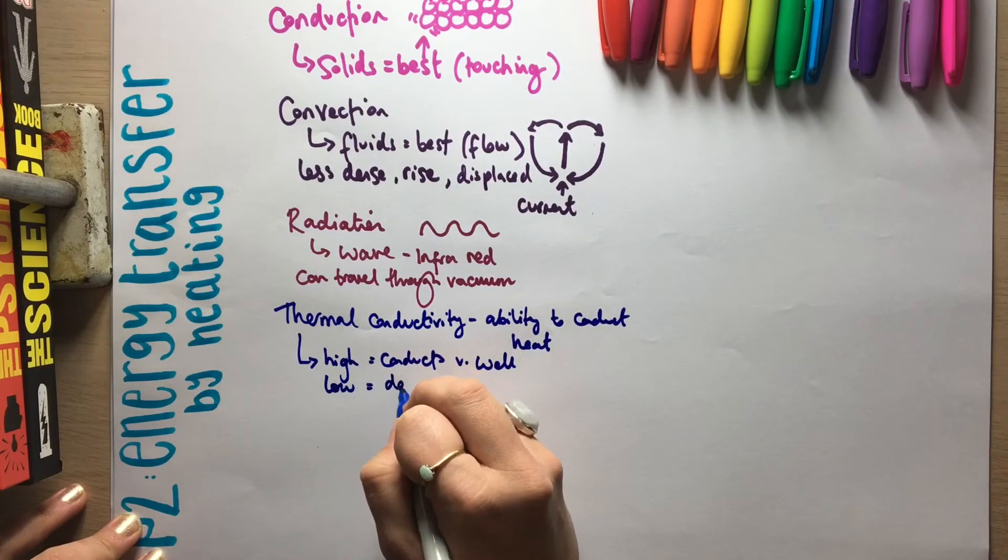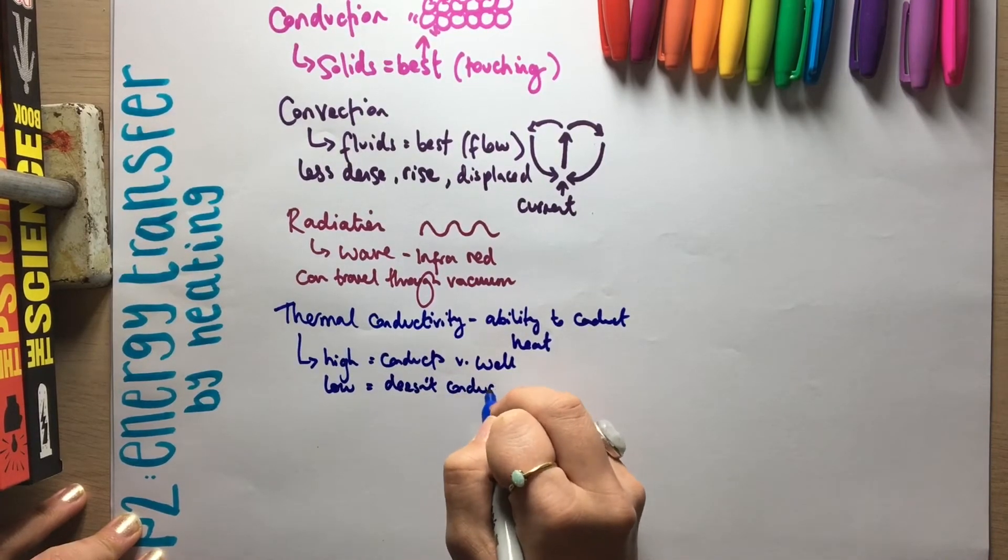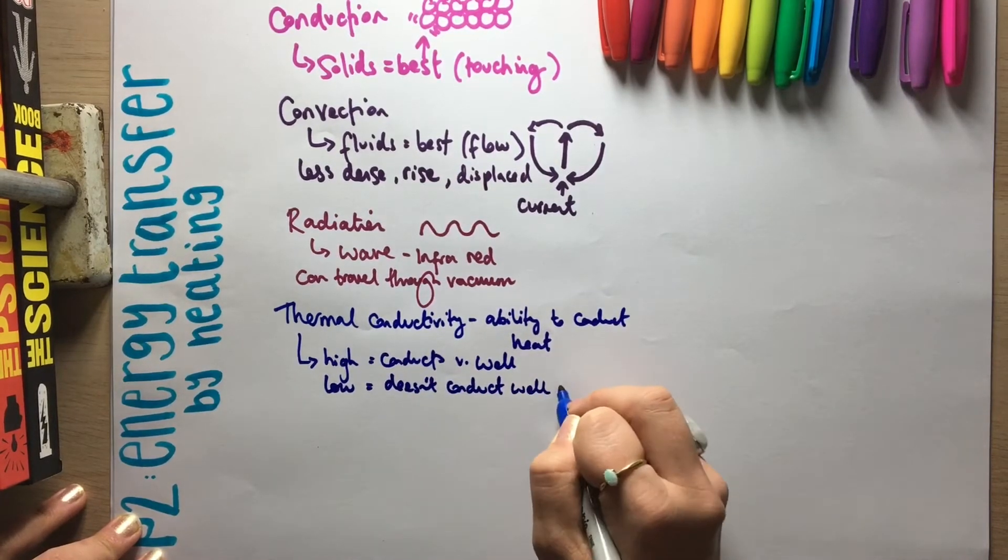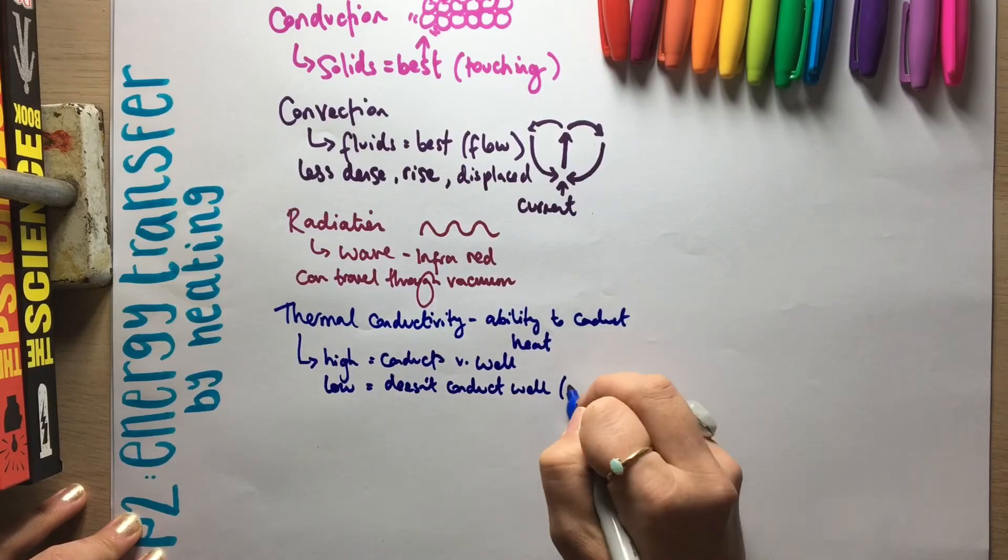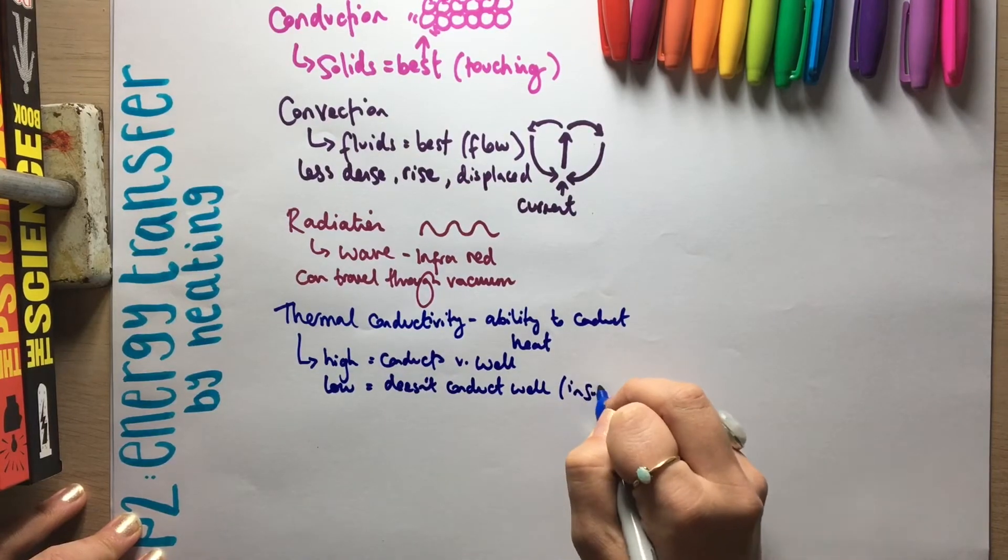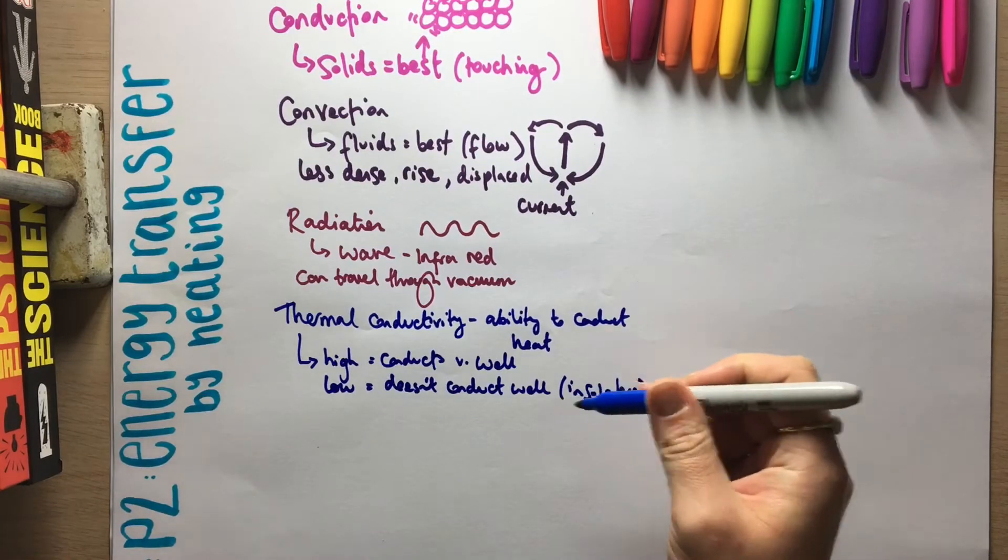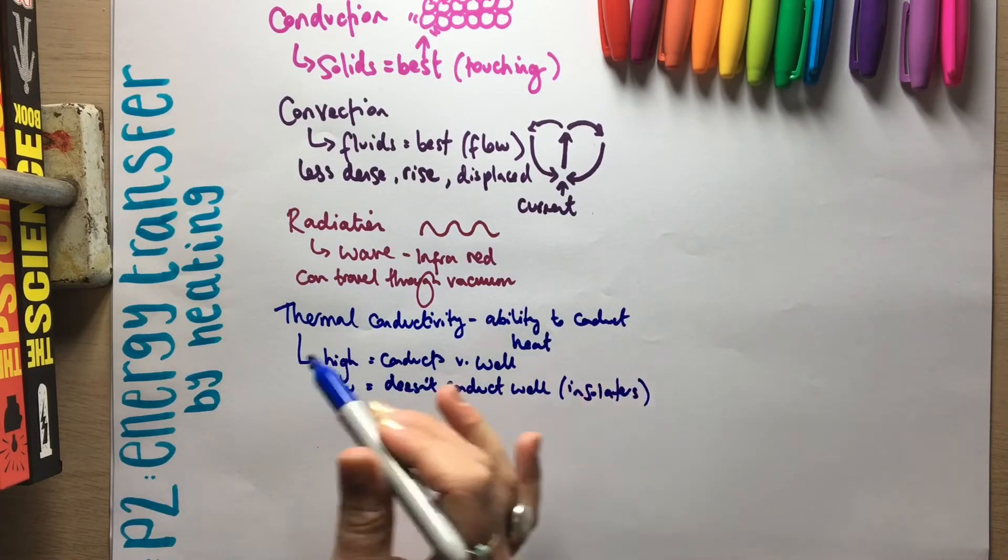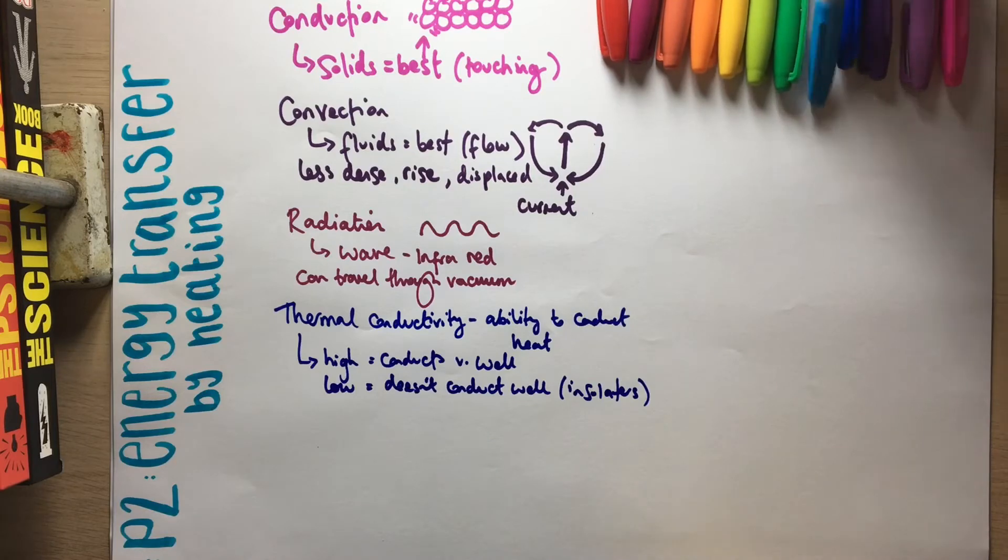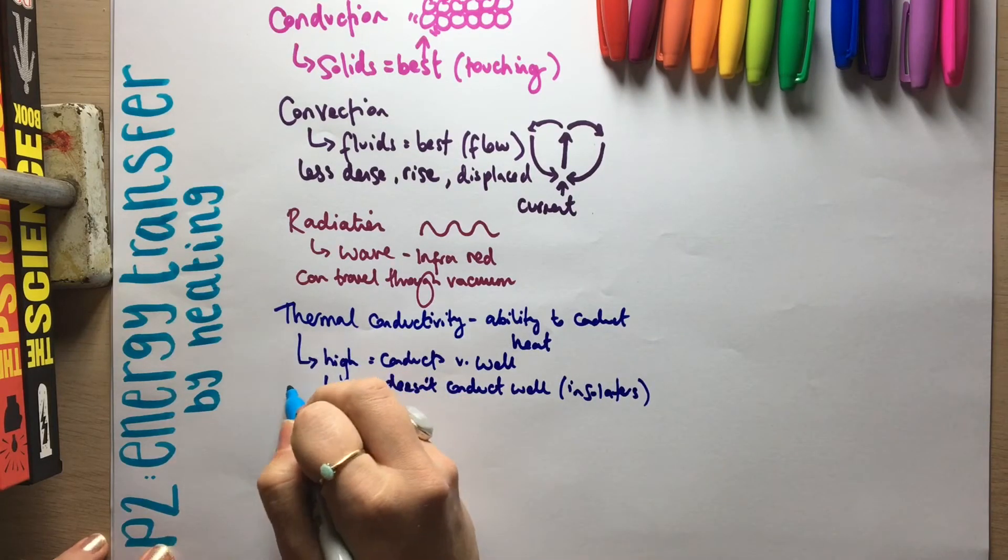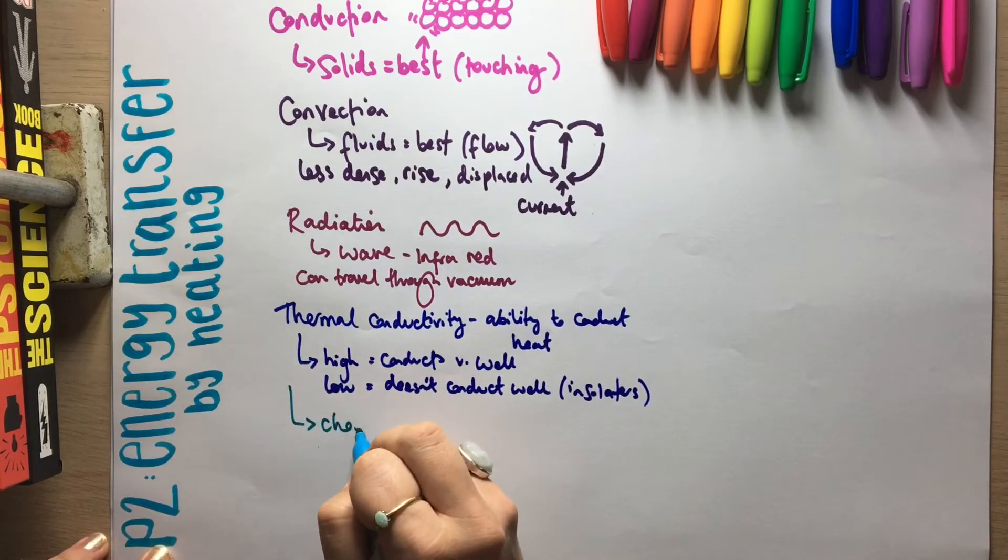Whereas if it has a low thermal conductivity, it doesn't conduct well. And sometimes you might hear materials that have a low thermal conductivity being referred to as insulators. So something is an insulator when it has a low thermal conductivity. So what you could think about is where this becomes relevant is choosing materials.